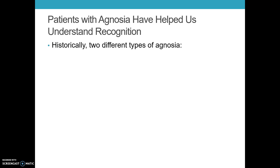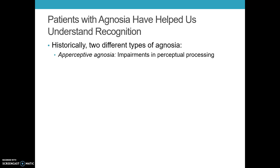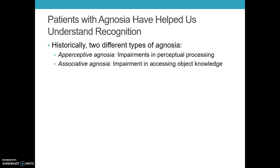Patients with agnosia have really helped us to better understand object recognition. Historically, we've had two different types. We've had aperceptive agnosia, where the impairment is in perceptual processing — aperceptive literally translates to without perception. On the other hand, we have associative agnosia, where patients can perceive the object but can't retrieve the object knowledge needed to identify it.